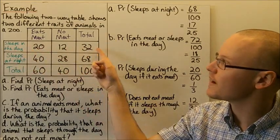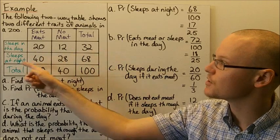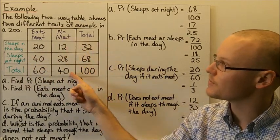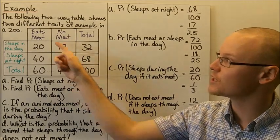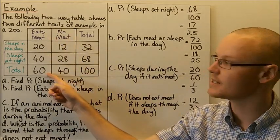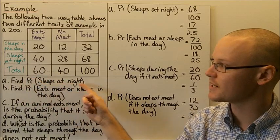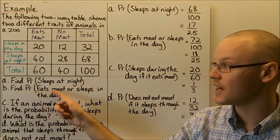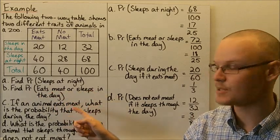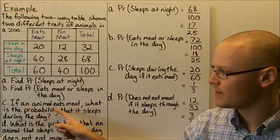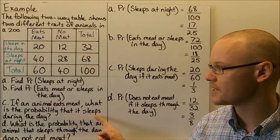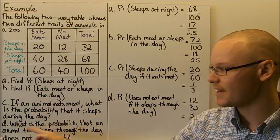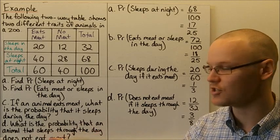The total number of animals that sleep in the day is 32, and the total that sleep at night is 68. The total that eat no meat is 40, and the total that eat meat is 60. We're asked to find the probability that an animal sleeps at night; the probability it eats meat or sleeps in the day; the probability it sleeps in the day given it eats meat; and the probability it doesn't eat meat given it sleeps in the day.